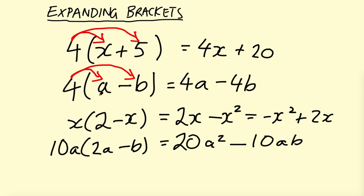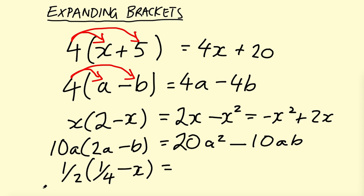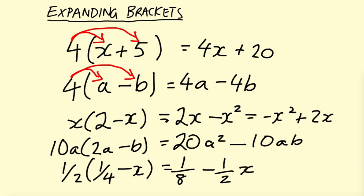Keep in mind you need to multiply everything, and you can even get ones with fractions. For example, one half times bracket one quarter minus X. One half times one quarter — hopefully you remember how to multiply fractions — gives one eighth. Then one half times minus X gives minus a half X. You can have all different kinds of examples, and those are just a few of them.